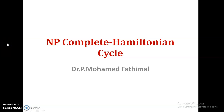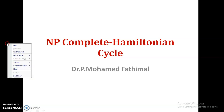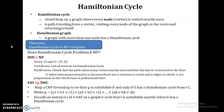In this video we are going to see the NP-complete Hamiltonian cycle problem. A Hamiltonian cycle is a closed loop on a graph where every vertex is visited exactly once. We have to start from a vertex, visit all the nodes, and once again come back to the starting vertex. If a graph has a Hamiltonian cycle then the graph is known as a Hamiltonian graph.